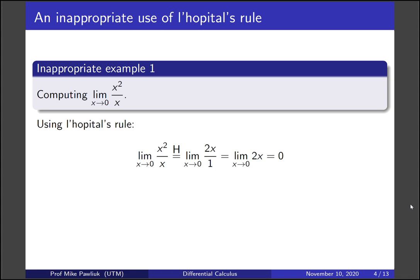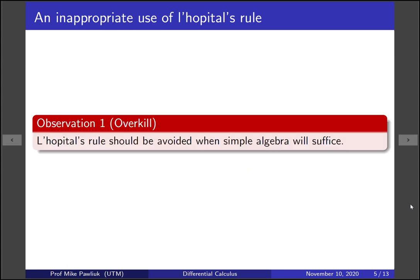But of course there are other ways to solve this limit, and in fact much easier ways. So the preferred way is to use algebra. And what I mean here is, cancel the x's first. There's an x in both the numerator and denominator, cancel them. So this is really the limit of x, which is just 0. So here's our first observation. Sometimes L'Hopital's rule is overkill. L'Hopital's rule should be avoided when simple algebra will suffice.